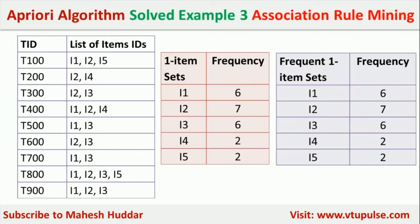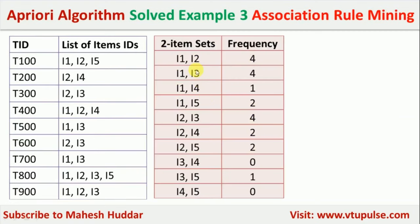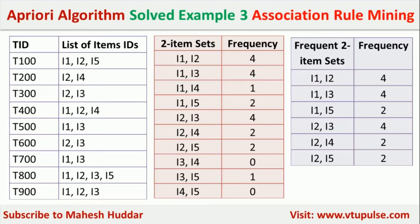Next, we go for two-itemsets. From the five frequent one-itemsets, we write all two-item combinations: I1-I2, I1-I3, I1-I4, I1-I5, I2-I3, I2-I4, I2-I5, I3-I4, I3-I5, and I4-I5 — giving 10 possibilities. We then find the frequency of each. For example, I1 and I2 were bought together 4 times, and I2 and I3 were bought together 4 times. We keep only those with frequency ≥ 2.